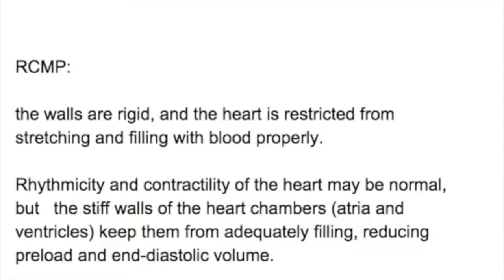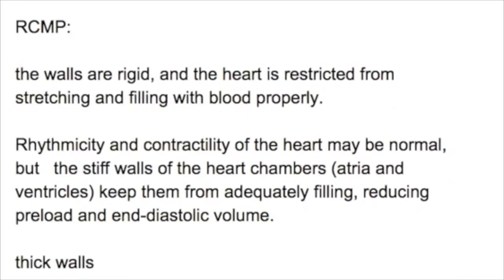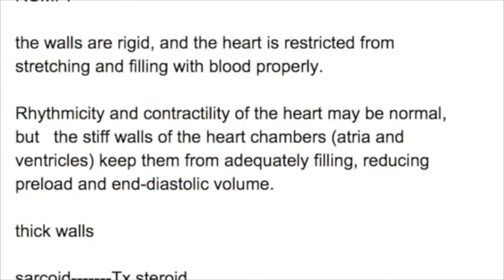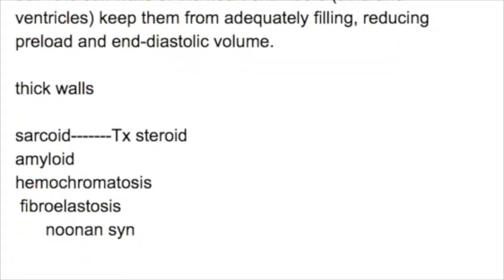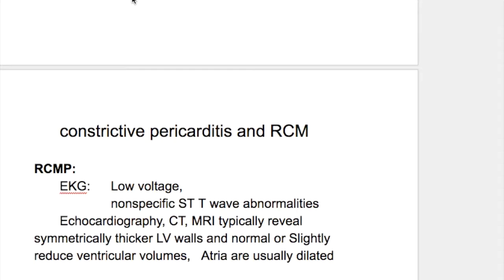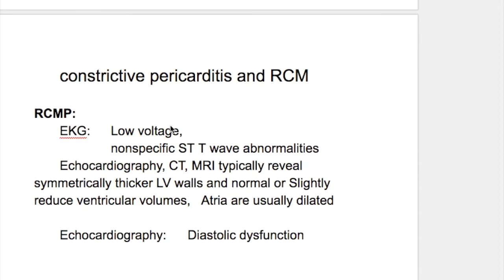What is restrictive cardiomyopathy? It is a condition where the ventricular walls are rigid and stiff, but the rhythmicity and contractility of the heart may be normal. Causes include sarcoidosis (treated with steroids), amyloidosis, hemochromatosis, endocardial fibroelastosis, and Noonan syndrome. Both constrictive pericarditis and restrictive cardiomyopathy present with right heart failure and low amplitude QRS complexes.